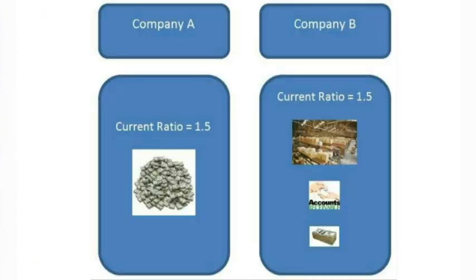For example, if two companies — Company A and Company B — both had a current ratio of 1.5, except Company A's current assets consisted of mostly cash while Company B's current assets consisted of mainly inventory and accounts receivable, then Company A would be very liquid while Company B might have trouble meeting its obligations, especially if it takes them longer to collect on the accounts receivable. There are other liquidity ratios such as the quick ratio and the cash ratio that attempt to find a more accurate measure of a company's liquidity.